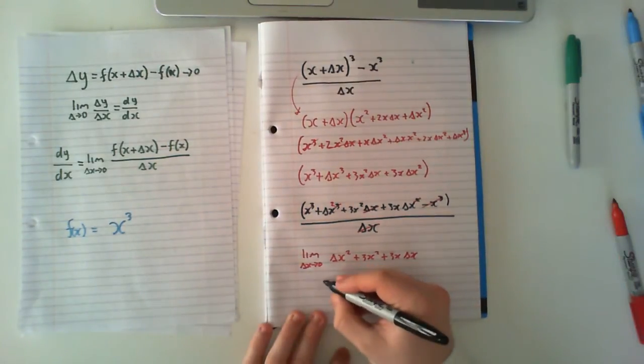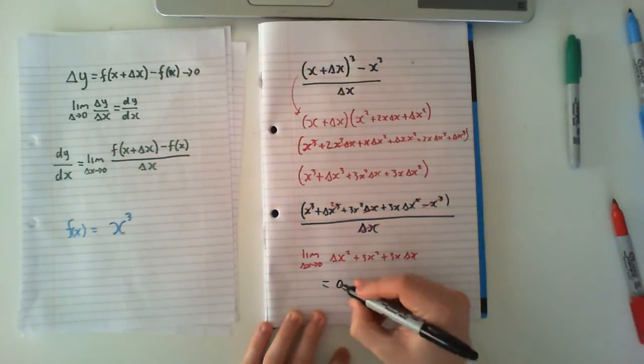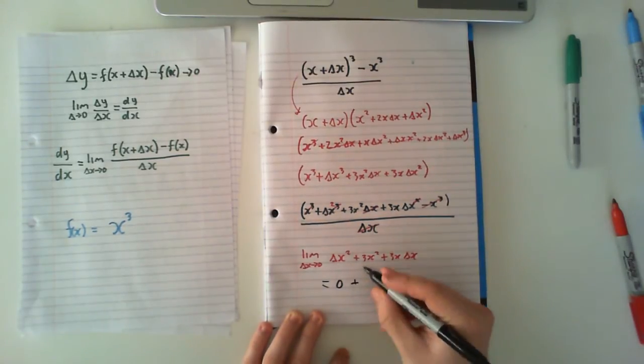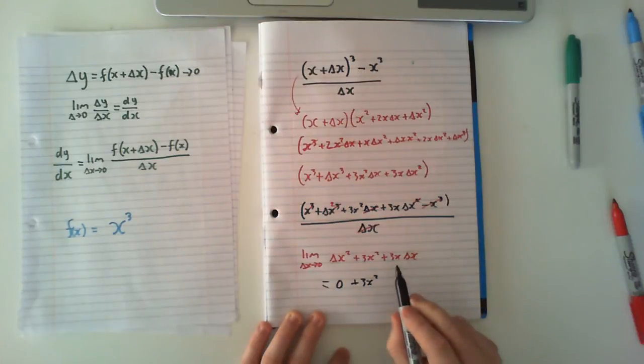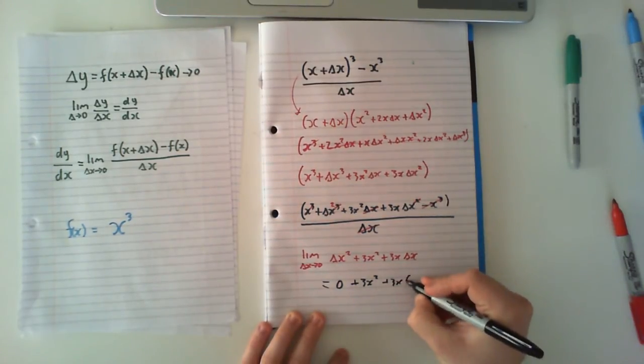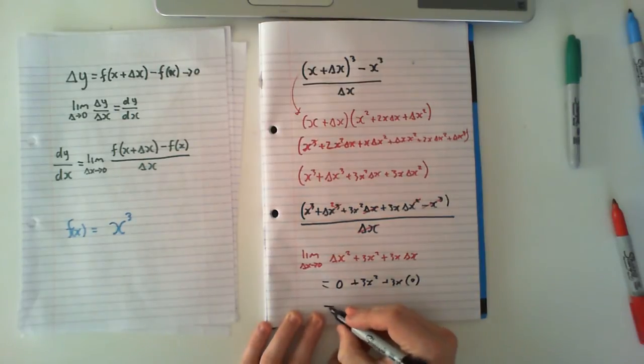So we can see delta x here, so this is going to be equal to, so this is 0. No delta x is in this term, so 3x squared. And just here we've got a delta x, so this is plus 3x by 0. This is just 3x squared.